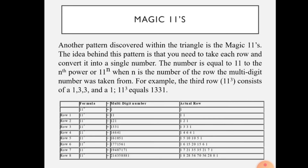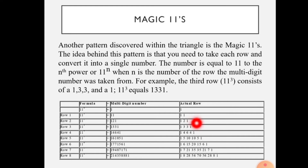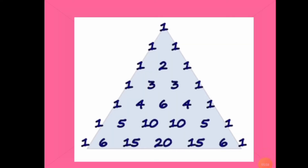Next is magic elevens. This is a very interesting concept. If you read the rows of Pascal's Triangle as numbers: row one is eleven, row two is one-twenty-one, row three is one-three-three-one. This pattern equals powers of eleven. One is eleven to the power of zero. Combine the digits: eleven to the power of one is eleven. Eleven squared is one-twenty-one. Eleven cubed is one-three-three-one. So eleven to the power of n equals the row numbers read across.